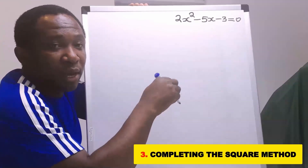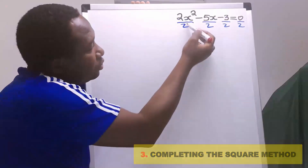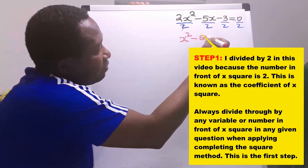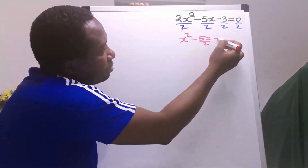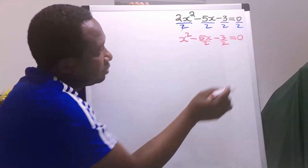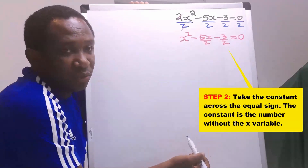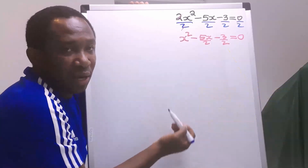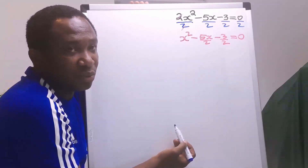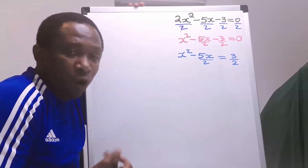To complete the square, we divide all terms by 2. Two cancels with 2, leaving x squared minus 5x over 2 minus 3 over 2 equals 0. Next, we move the constant, which is minus 3 over 2, to the other side, where it becomes plus 3 over 2. These are the steps we must follow when applying the Completing the Square method.